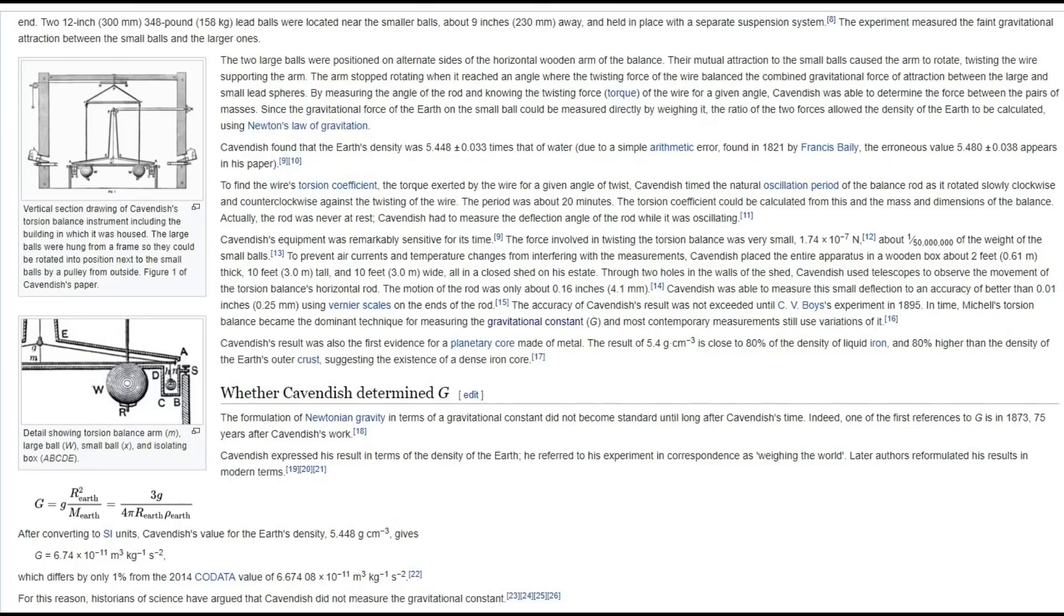You got that from this Wikipedia page, Anthony. And that's not what it says. It does not say gravity is one 50 millionth of the weight of my telephone. And saying that is being either stupid or dishonest or both. What it says specifically is the force involved in twisting the torsion balance was very small, about one 50 millionth of the weight of the small balls. That's what it says specifically. How about we don't misrepresent this anymore?